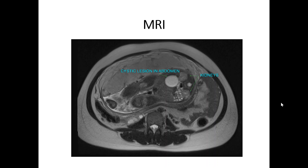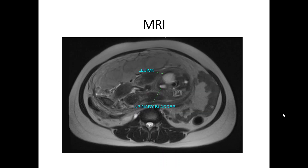Fetal MRI shows a well-defined altered signal intensity lesion noted in the fetal abdomen adjacent to the right kidney, which has fluid intensity and is seen separate from both the kidneys. The lesion is also seen separate from the urinary bladder, as was noted on the antenatal ultrasound.